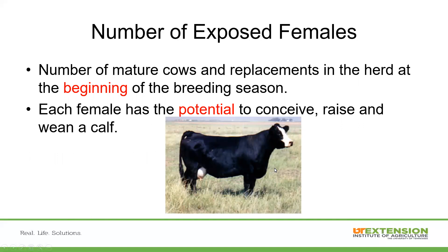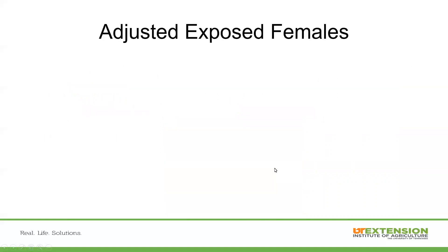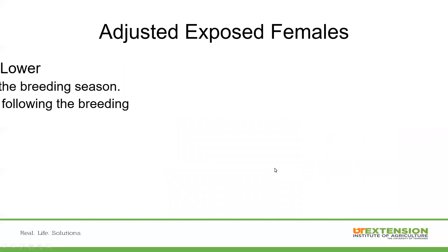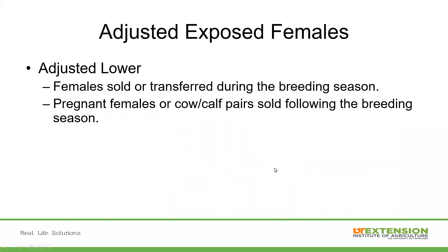One of those measures on the beef gauge is the number of exposed females in the cow herd — the number of mature cows and any replacement heifers that get exposed to a bull or AI at the beginning of breeding season. Each female has the potential to conceive and raise that calf. In an example, we often use 50 cows or 50 cows and heifers exposed to a bull. You need to adjust that number of 50 lower if you sell females out of that herd during the breeding season, or after you determine which ones are pregnant — whether you're selling a cow-calf pair or a pregnant female. So if you sell, say, five pregnant females, you want to lower that to 45 to get a true adjustment of the herd.